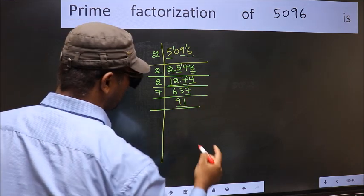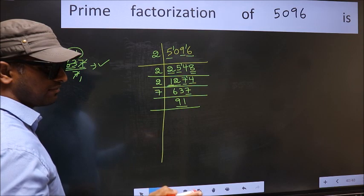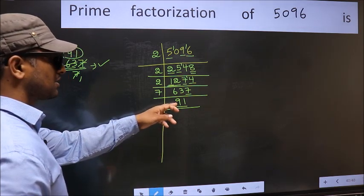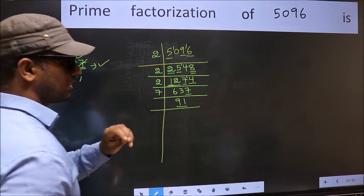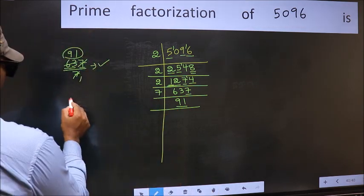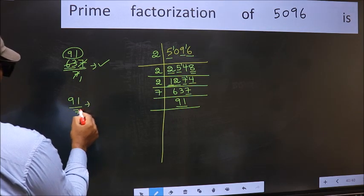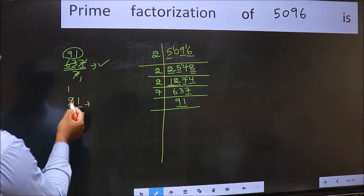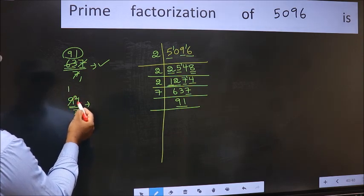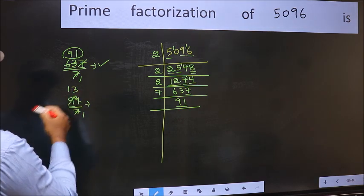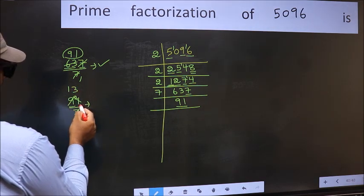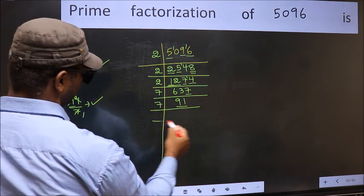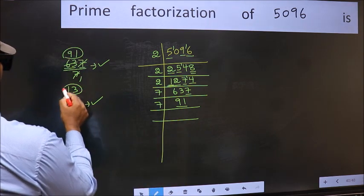Now for this number 91, we don't need to check divisibility by 2, 3, or 5, as we had already checked before. So we start checking from 7 onwards. 91 divided by 7: a number close to 9 in the 7 table is 7 times 1 is 7. 9 minus 7 is 2, carried forward: 21. When do we get 21 in the 7 table? 7 times 3 is 21. No number has been left out, so 91 is divisible by 7. So we write 7 here, and the result is 13.